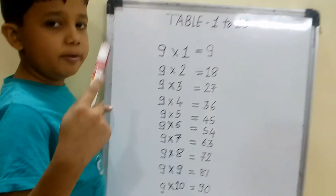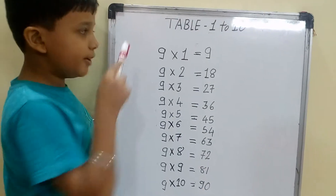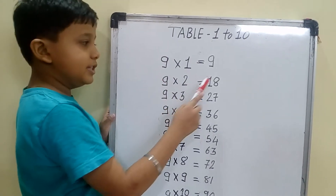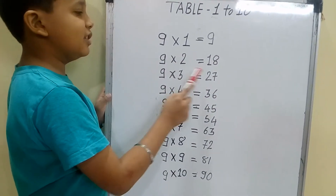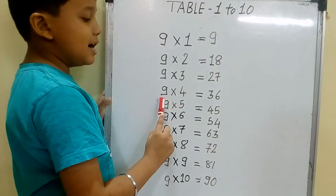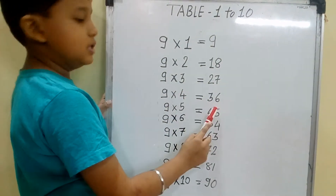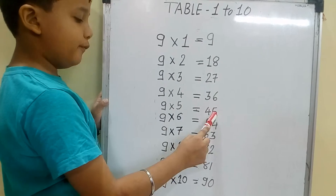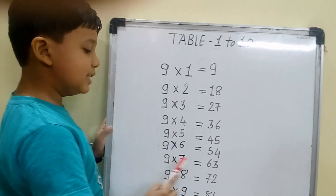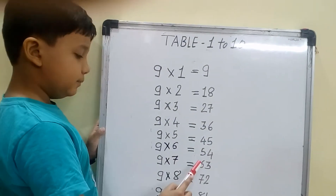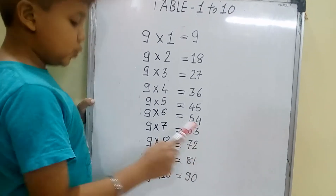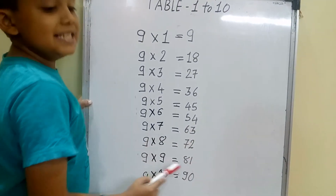Children, now repeat with me the table of nine. Nine ones are nine, nine twos are eighteen, nine threes are twenty-seven, nine fours are thirty-six, nine fives are forty-five, nine sixes are fifty-four, nine sevens are sixty-three, nine eights are seventy-two, nine nines are eighty-one.